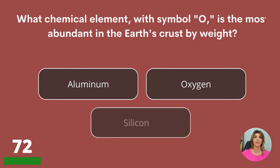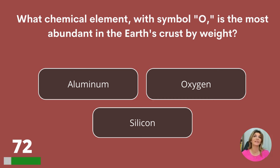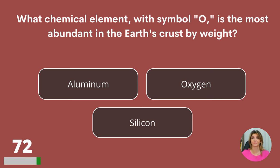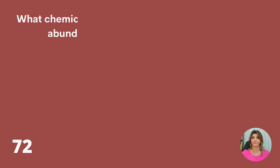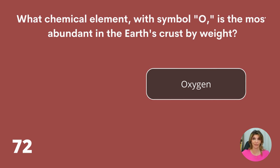What chemical element with symbol O is the most abundant in the Earth's crust by weight? Aluminum, oxygen, or silicon? Oxygen.